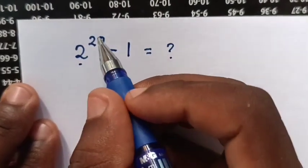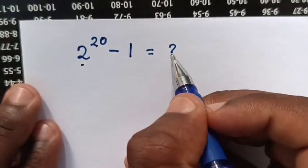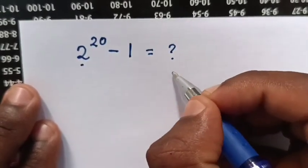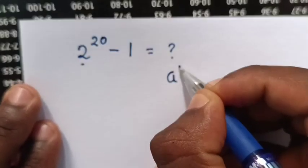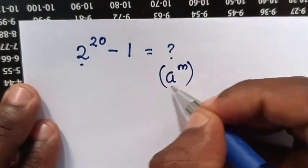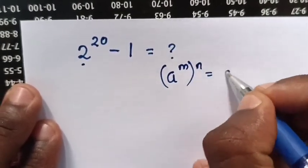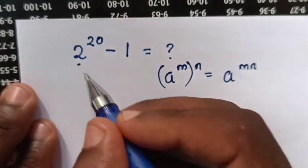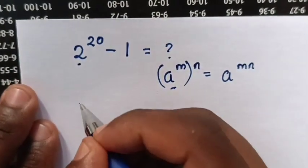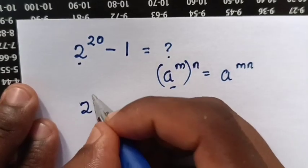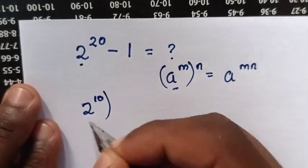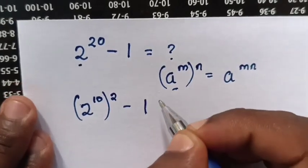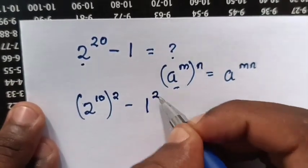Hello! So, 2^20 - 1 without using a calculator. For 2^20, we use the exponential rule that (a^m)^n = a^(mn). Then 2^20 we make into this form, so it will be (2^10)^2 - 1. And then this 1 is the same as 1^2.